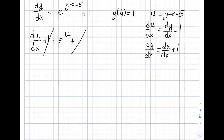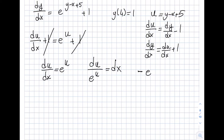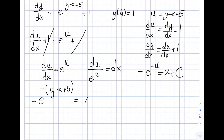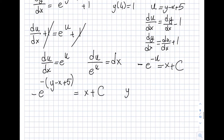Simplifying gives du/dx equals e^u. Separating variables: du/e^u equals dx, or e^(−u) du equals dx. Integrating: minus e^(−u) equals x + C. Substituting u = y minus x + 5 back in gives: minus e^(−(y − x + 5)) equals x + C, which is the general solution.